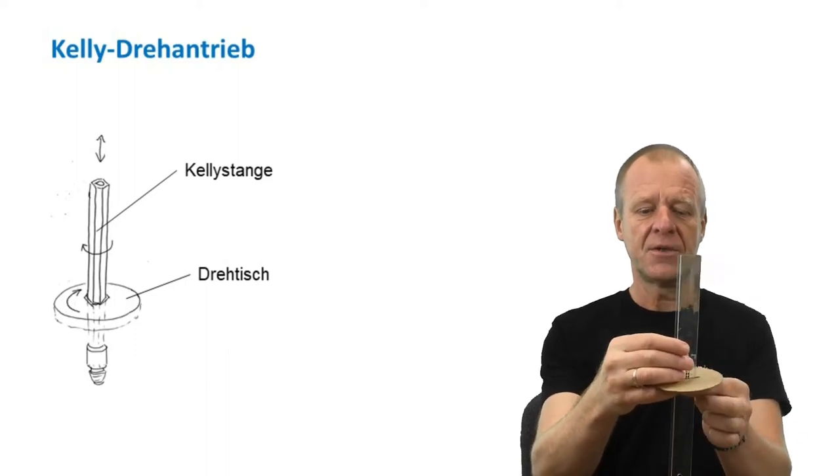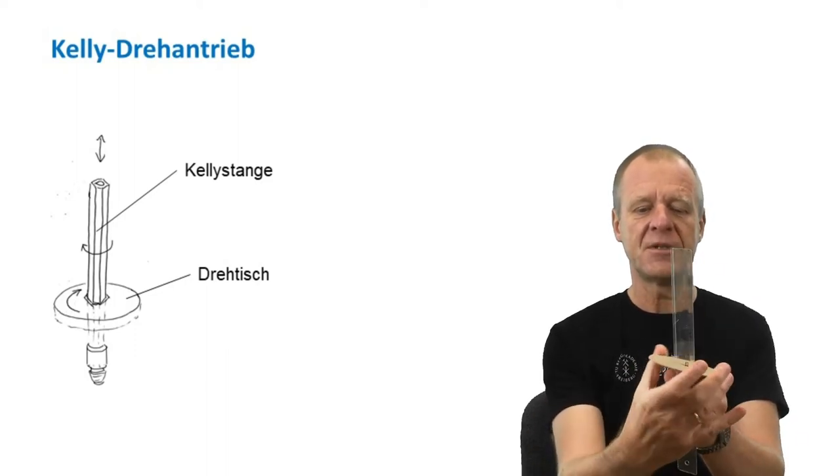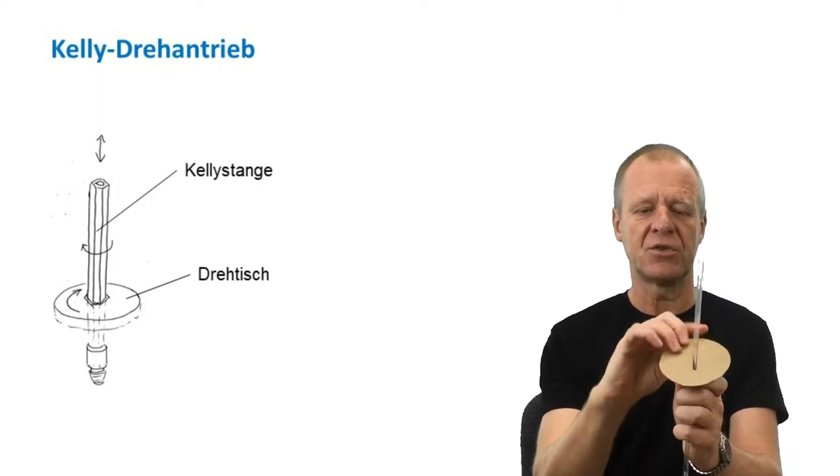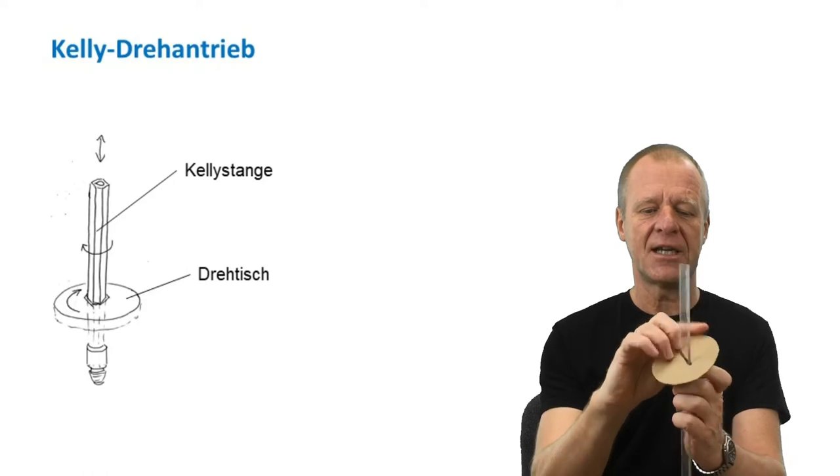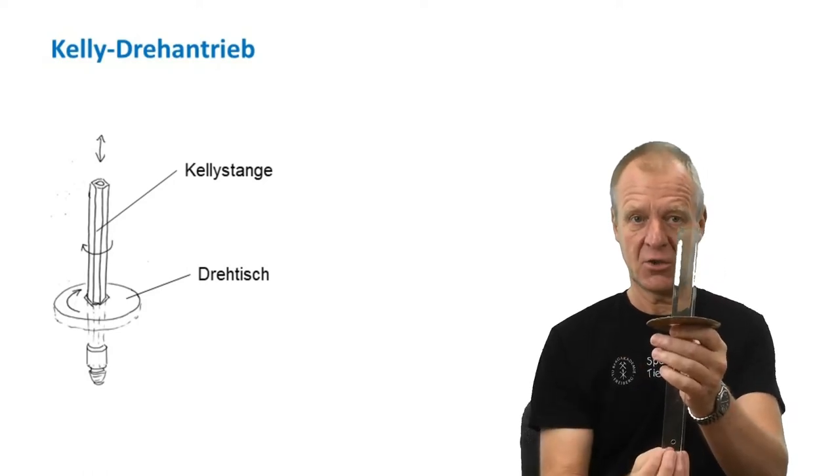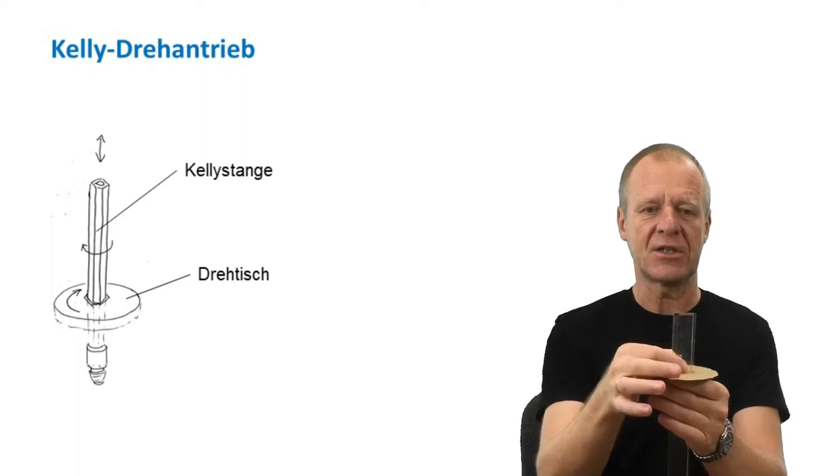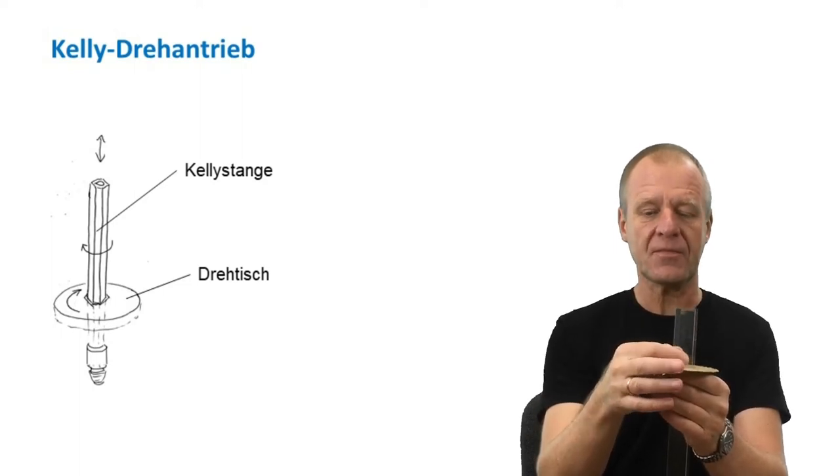If we now start rotating the rotary table by means of a diesel engine, the Kelly rod will have to rotate along with it, and so will the entire drill string, which is attached to the lower end of the Kelly rod. While the Kelly rod rotates, it can still move freely up and down through the rotary table.